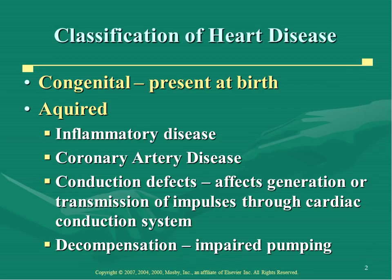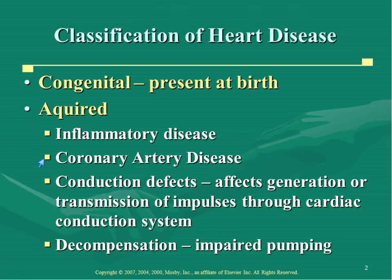When we classify heart disease, we can classify it as congenital, meaning present at birth, or acquired. Acquired heart diseases are things that we pick up along the way. Those can be further divided into four broad categories — inflammatory disease, coronary artery disease, conduction defects, and heart failure — each representing two to three hours of content. Coronary artery disease comes on test one; the others are on test two.